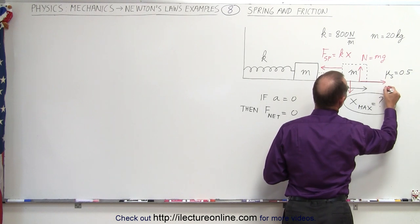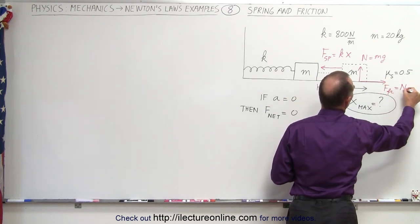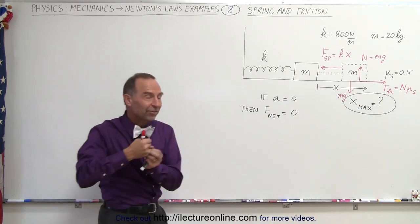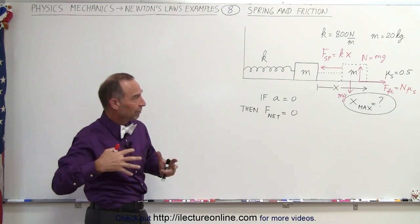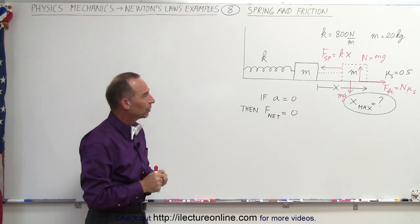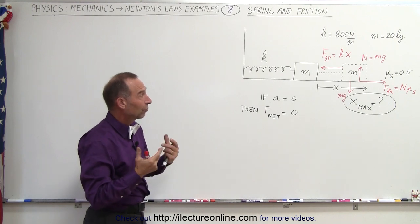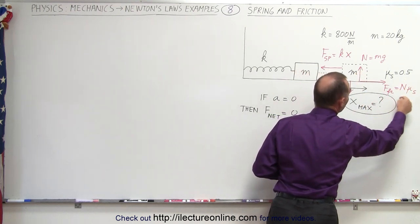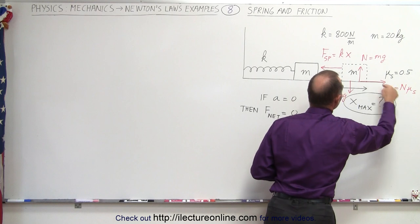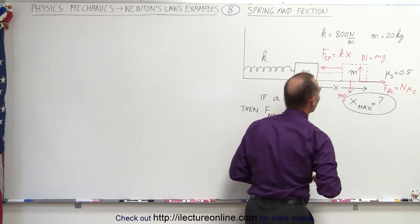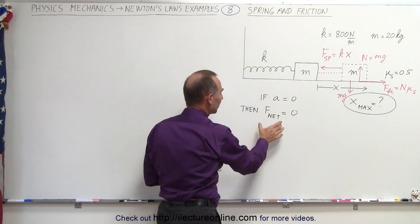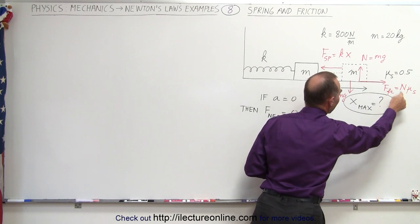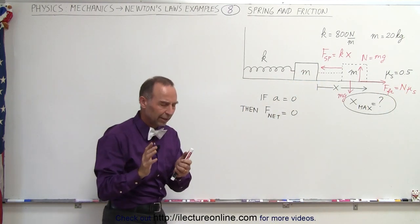It would be a friction force to the right. The friction force is equal to the normal force times mu — in this case the static coefficient of friction, since we pull the mass outward, hold it stationary, and then let go. The block will stay in place as long as the maximum friction force is greater than or equal to the spring force, meaning the net force equals zero.